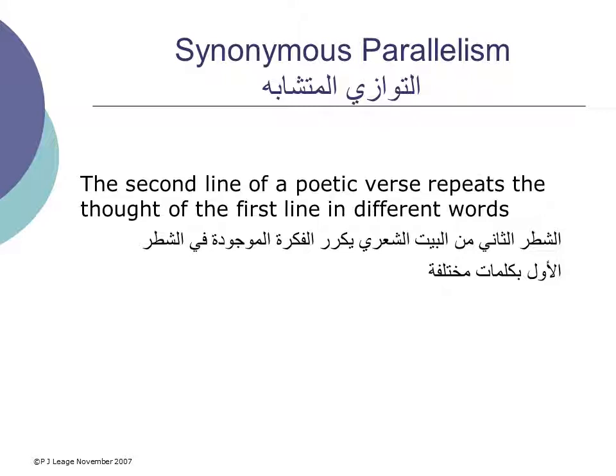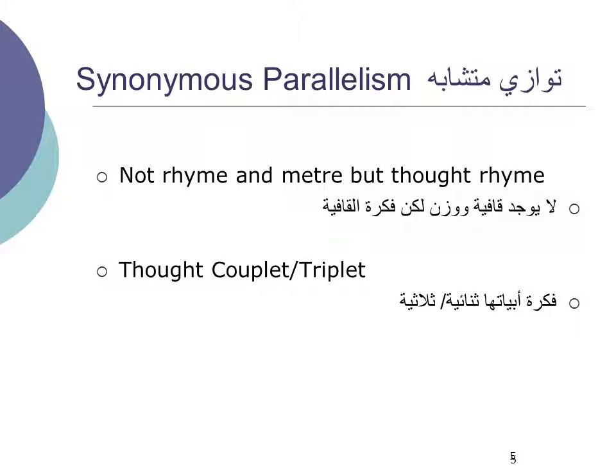The first one we'll discuss is synonymous parallelism. This is when the second line of a poetic verse repeats the thought of the first line, but only in different words. For Hebrew poetry, it's not so much rhyme and meter, but rather what we would call thought rhyme. This is identified with both couplets and triplets, but mostly couplets.